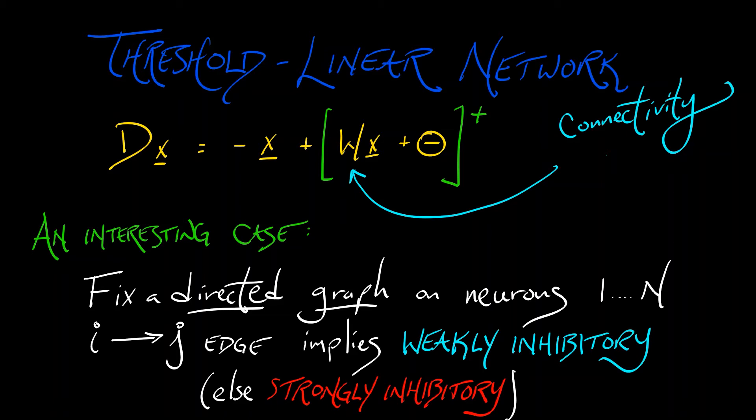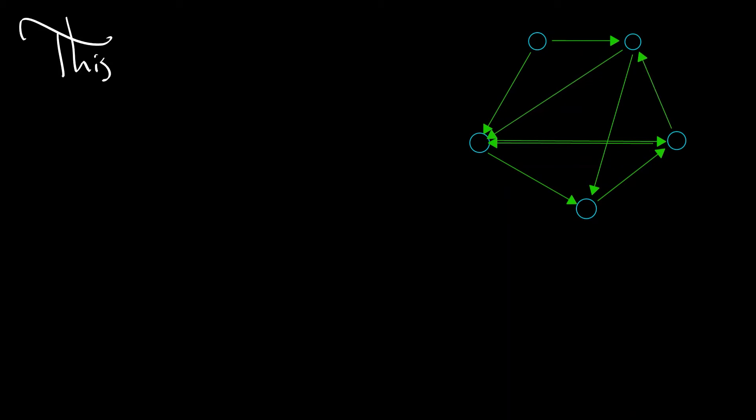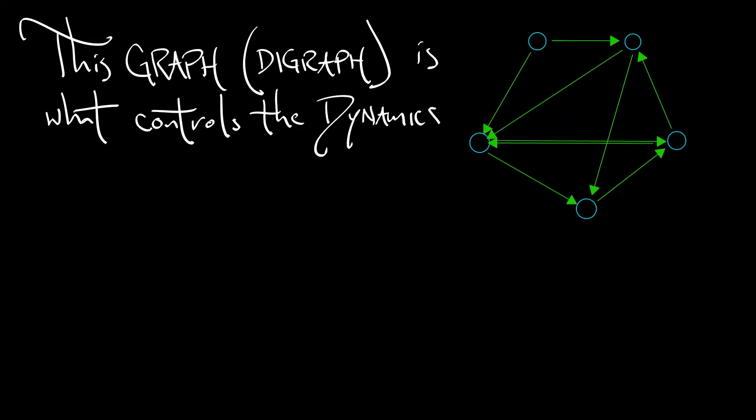So we're going to mix it up a little bit and see what happens. So let's say we've got a graph on five neurons, and it is a directed graph or a digraph. You have arrows on the edges, and that is what controls the dynamics. We're going to set wij equal to negative one plus some epsilon if there's a directed arrow from j to i, but we're going to set it to negative one minus epsilon if there's not a directed arrow from j to i.